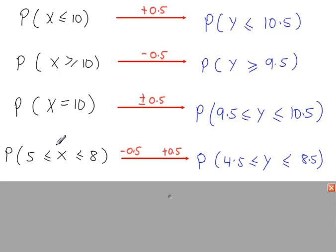And for between two values, subtract a half on this side, add a half on this side. So you get 4.5 and 8.5.